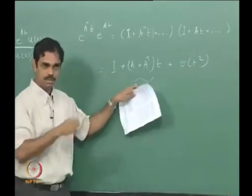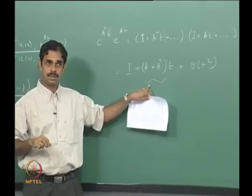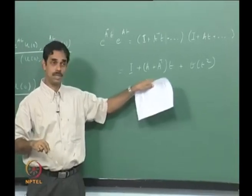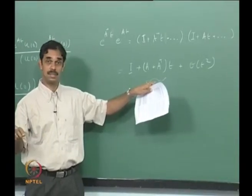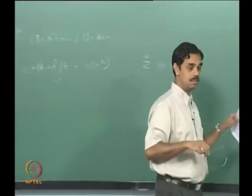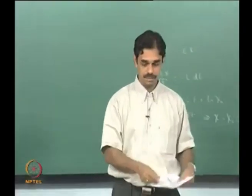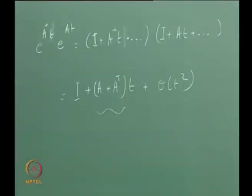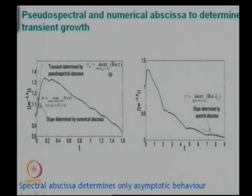What kind of matrix is this? This is a symmetric matrix. So we should be able to look at its eigenvalues and tell whether it is growing or not. The eigenvalue of (A plus A-transpose) divided by 2 is called the numerical abscissa, and that will determine how much is the initial growth. How far it grows depends on the pseudo-spectral abscissa — how much it protrudes to the other side — and the asymptotic decay is determined by the eigenvalues, or the spectral abscissa.